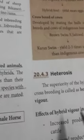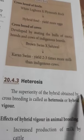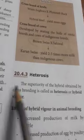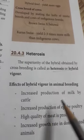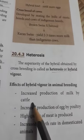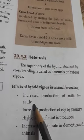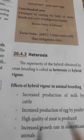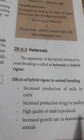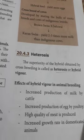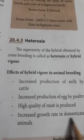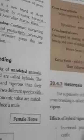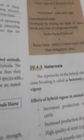Heterosis: the superiority of the hybrid obtained by crossbreeding is called heterosis. The effects of heterosis include: increased production of milk by cattle, increased production of eggs by poultry birds, high quality meat produced by cattle, goat, and sheep, and increased growth rate in domesticated animals. These are the effects of hybrid vigor.